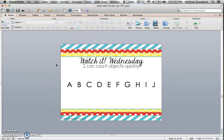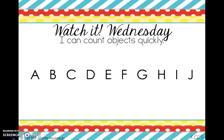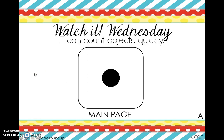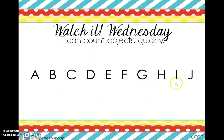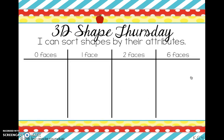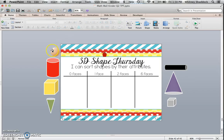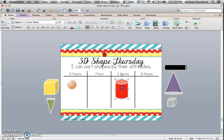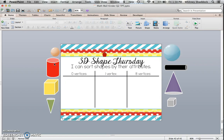Watch It Wednesday is Subitizing. That also has links to 10 of these — they're die faces this time — and then you've got the click to go back to the main page. You've got 10 options on these that should be plenty for your nine-week quarter. And then 3D Shape Thursday will also be done in normal view so that you can sort by the number of faces on a shape, or they can sort by the number of vertices as well.